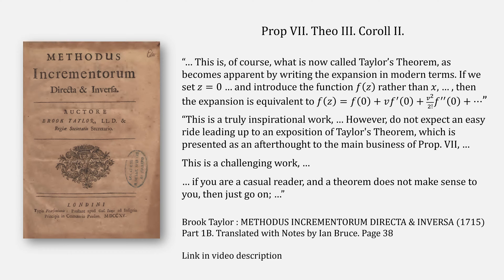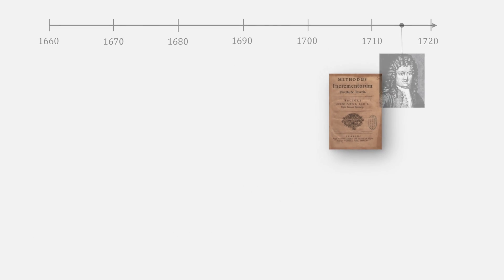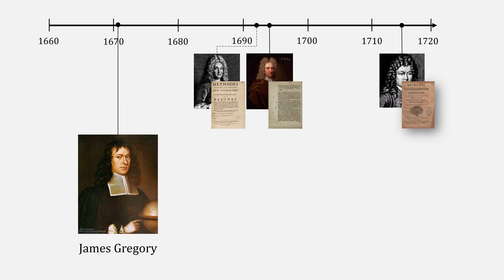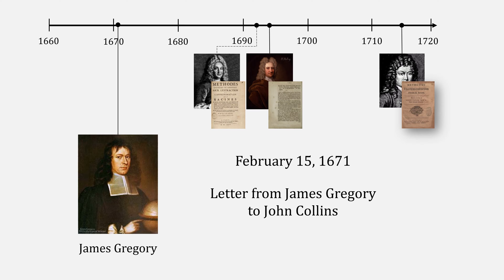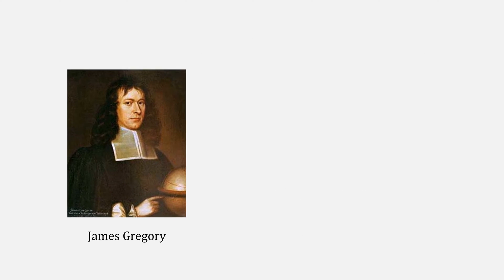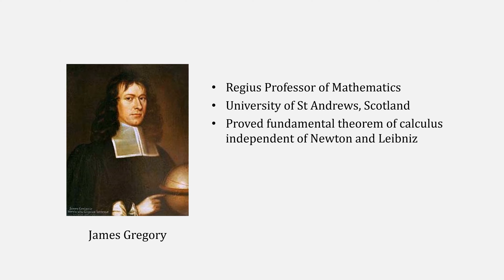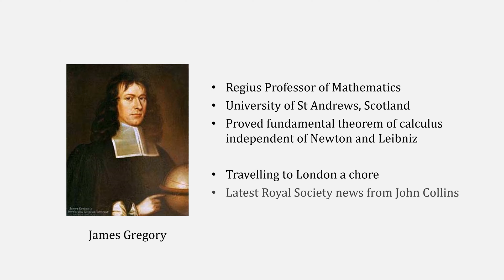Actually, let's go further back in time — before Methodist, before Halley, even before Delauny — all the way to 1671 and James Gregory in a letter to John Collins. Gregory was a professor of mathematics at the University of St. Andrews in Scotland, and had proved the fundamental theorem of calculus independently of Newton and Leibniz. Living in Scotland and traveling to London was quite a chore, so he would get all of his latest Royal Society news from John Collins.